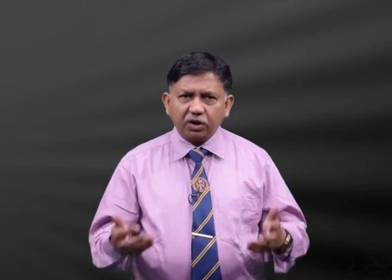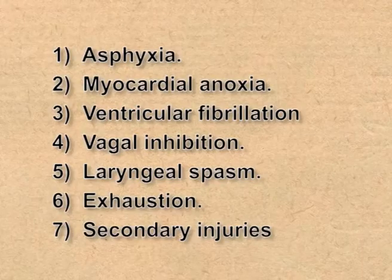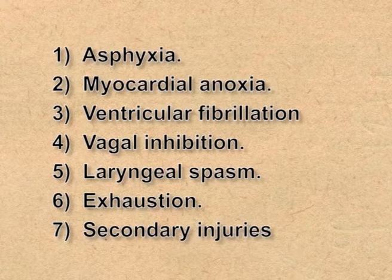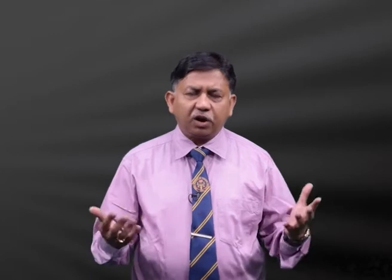The various causes of death in drowning include asphyxia, myocardial anoxia, ventricular fibrillation, vagal inhibition, laryngeal spasm, exhaustion, and secondary injuries such as head injuries. Any of these or all of these could be found in a case of drowning.